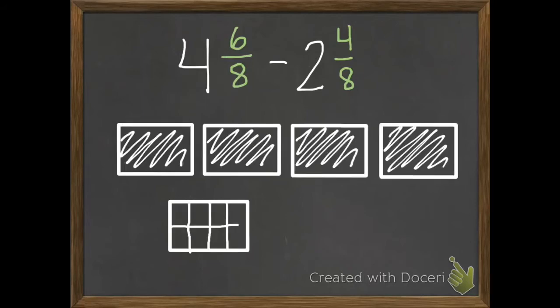For this first one, I start with 4 and 6 eighths. So I have 4 holes and then I have 6 eighths of another hole. And then I'm going to be subtracting some of these. So I'm going to first subtract my 2 holes. So I'm going to x out 2 of these holes. And then I have 4 eighths that I need to subtract. So I'm going to cross out 4 of those eighths.